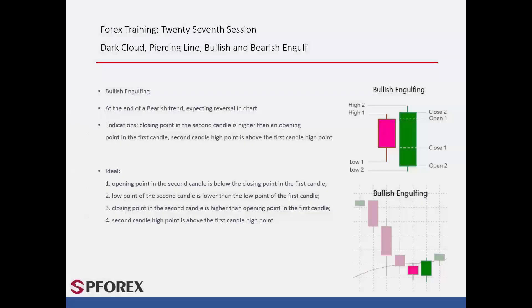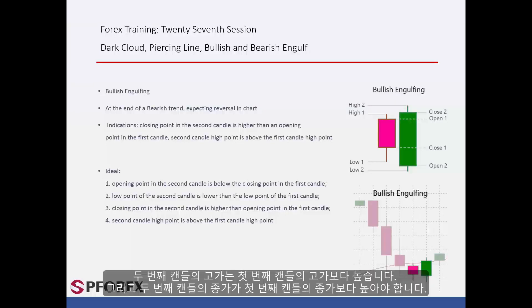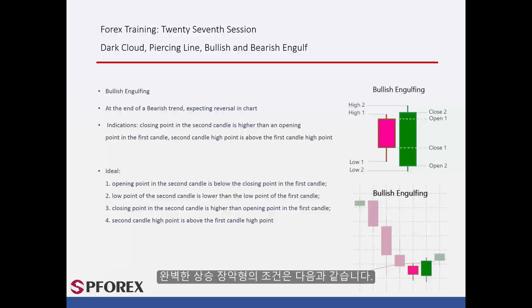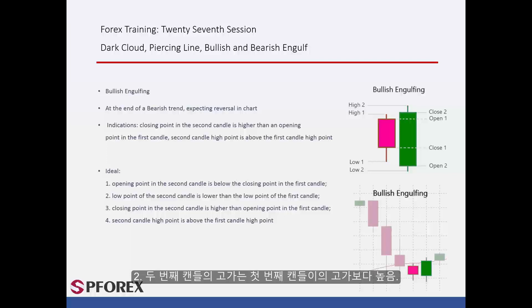Bullish engulfing pattern indicates a reversal point on a downward trend and includes two candles. Its requisites are: the high of the second candle is above the high of the first candle, and the close price of the second candle must be higher than the close of the first candle. The ideal conditions are: (1) open of the second candle is lower than the close of the first; (2) high of the second is above the high of the first; (3) close of the second is higher than the open of the first; and (4) low of the second is lower than the low of the first candle.